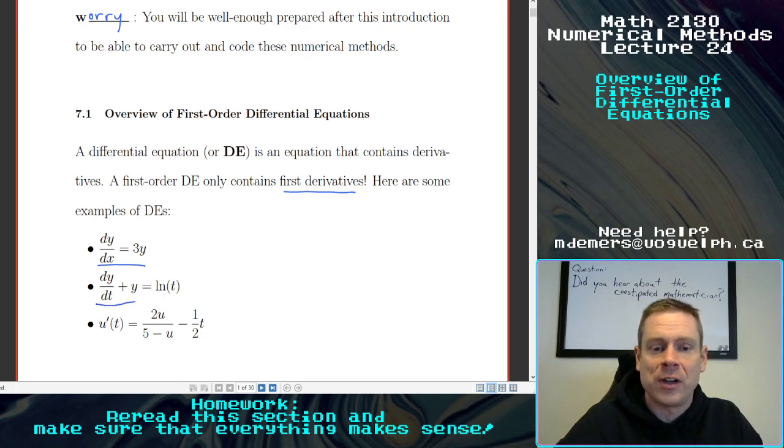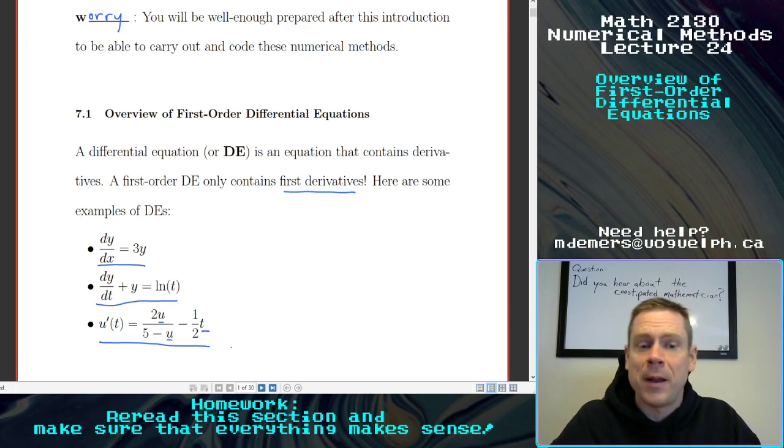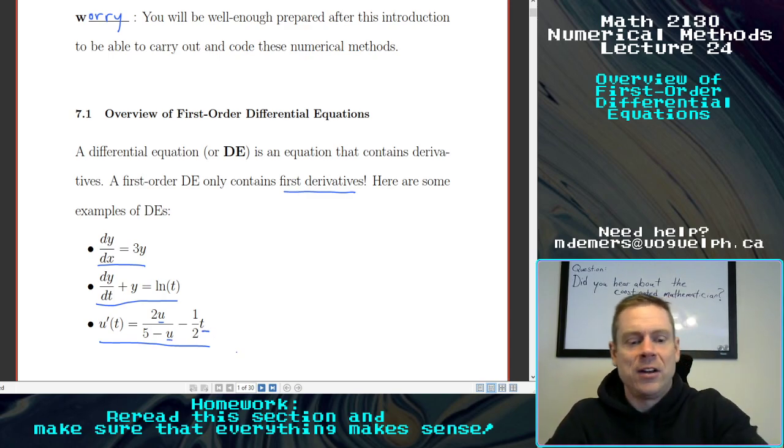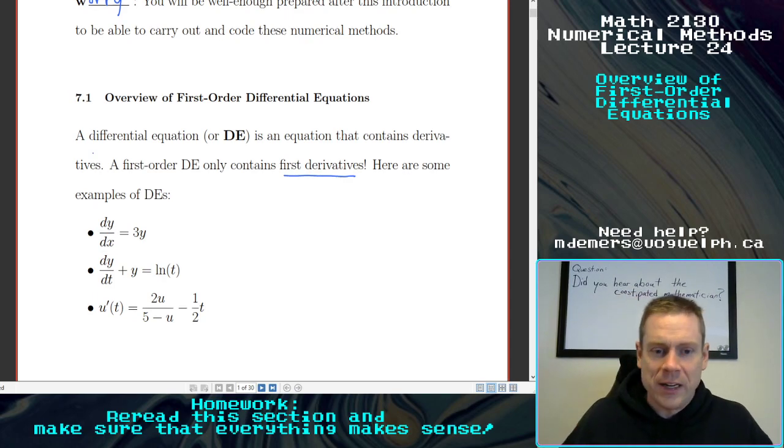dy/dt plus y equals ln of t is another example, or u prime equals, here's a function of the, what we call the dependent variable, the u, and the t, the independent variable, what u depends on. So a few different examples of first order differential equations right here.